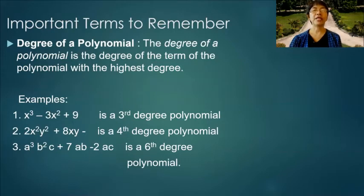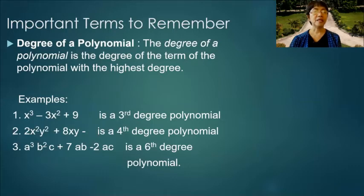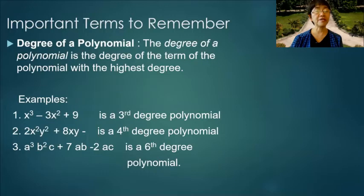Degree of a polynomial: the degree of a polynomial is the degree of the term with the highest degree. Example 1: the highest degree is in x cubed, so this is a third-degree polynomial. Example 2: the first term has the highest degree, so this is a fourth-degree polynomial. Example 3: this is a sixth-degree polynomial because adding the exponents of the first term gives 3 plus 2 plus 1, which equals 6.